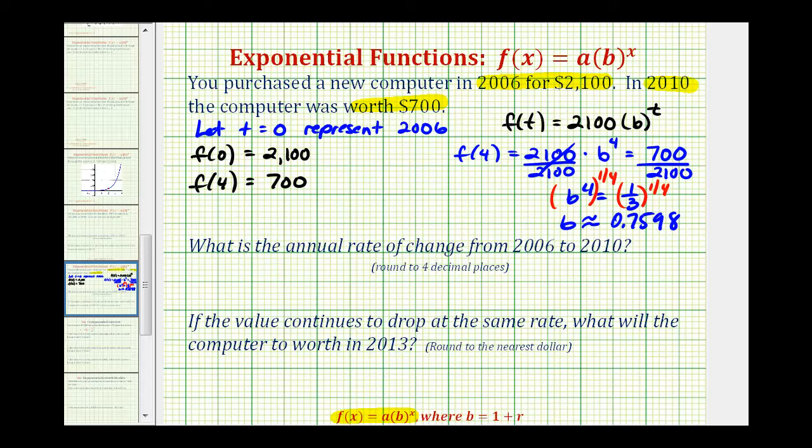So this is going to be approximately 0.7598. Which means the exponential function that we'll use to model the value of the computer will be f of t equals 2,100 times 0.7598 raised to the power of t. Where t is the number of years after 2006.